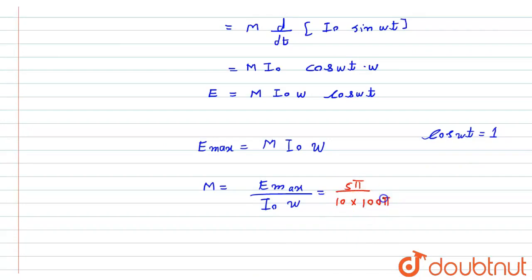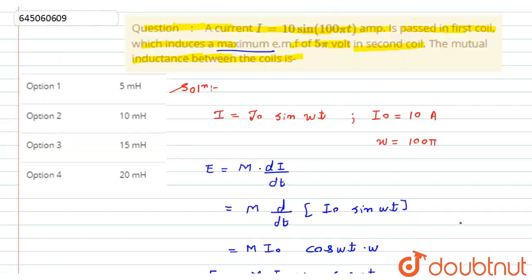So from here, this π gets cancelled, 5 into 10, and after simplifying we get 0.5 × 10⁻² henry, which we can also write as 5 millihenry.